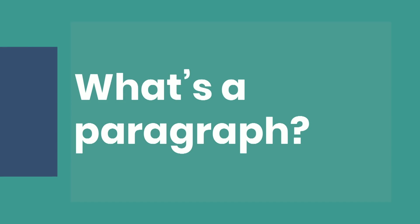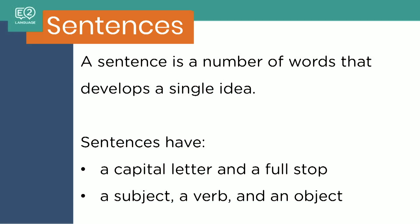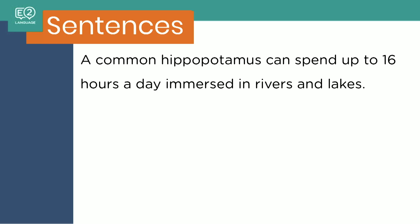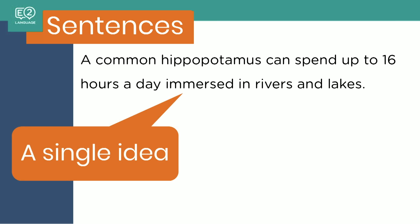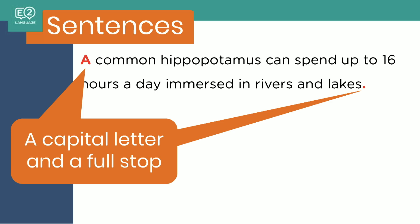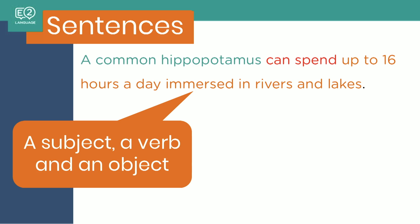First thing we need to think about is: what is a paragraph? And to answer that question, we need to think about sentences. What's a sentence? A sentence is a number of words that develops a single idea. A single sentence has a single idea. Sentences also have some characteristics — they have a capital letter and a full stop. And they usually have a subject, a verb, and an object. So let's look at this sentence: a common hippopotamus can spend up to 16 hours a day immersed in rivers and lakes. It has a number of words, a single idea, a capital letter and a full stop, and a subject, a verb, and an object.